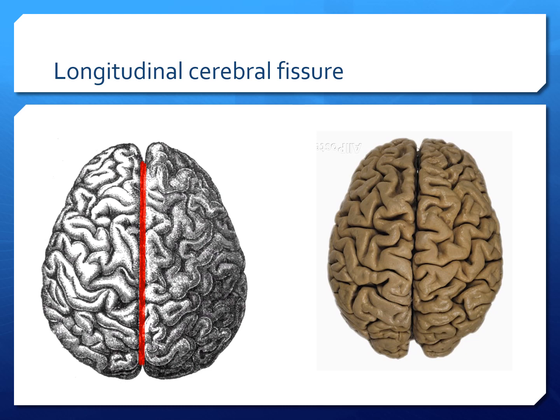In this slide you can see the two cerebral hemispheres that are separated by a fissure that is longitudinal. It is marked with a red color here, so it is called as longitudinal cerebral fissure.